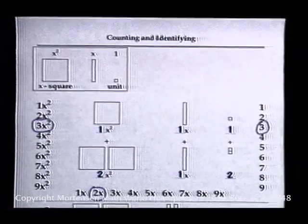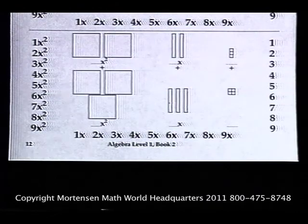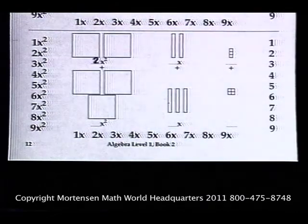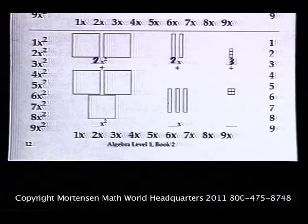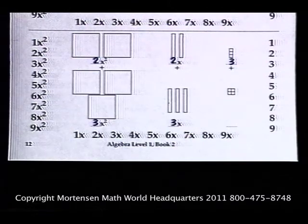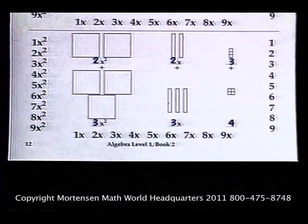Let's do the next one. In the top row, we are counting two X-squares, two X's, and three units. In the bottom row, we are counting three X-squares, three X's, and four units.